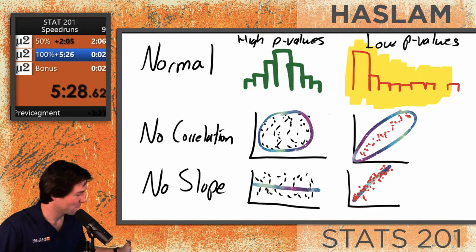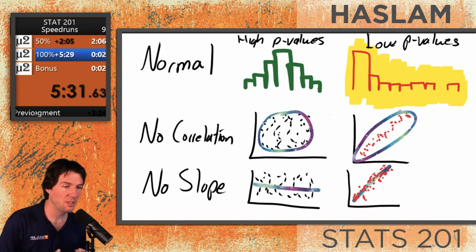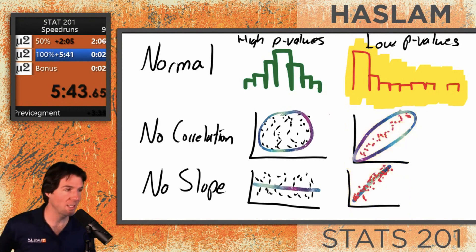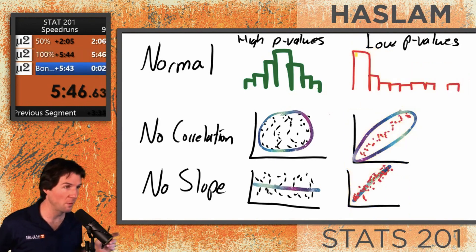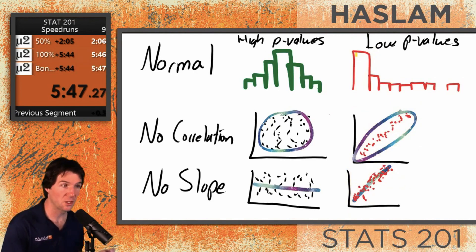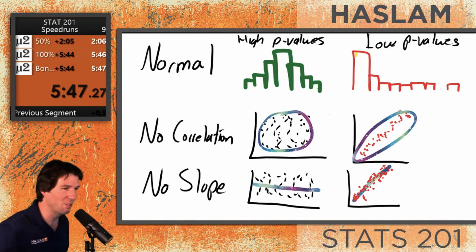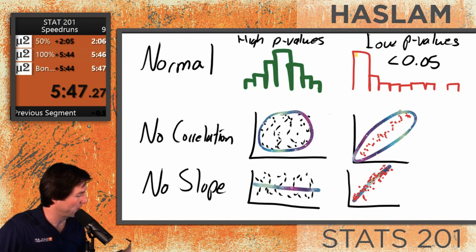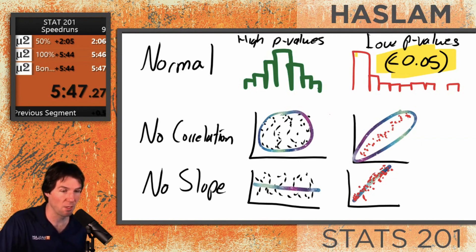So let's go to low p-value. If it's normal, then a skewed result is unlikely. If there's no correlation, then correlation is unlikely. If there's no slope, then seeing a strong slope is unlikely. This is a quick speedrun review of how we handle the null and alternative — what we assume and what is likely or unlikely. It's very important to know that all low p-values are p-values less than 0.05.